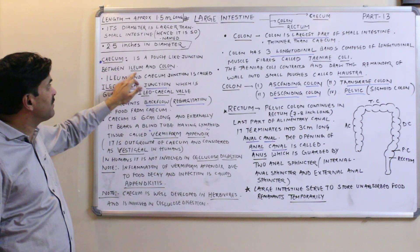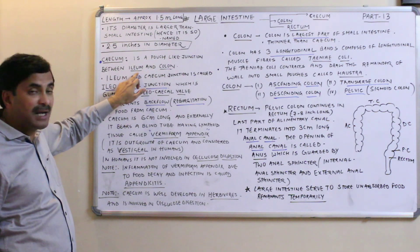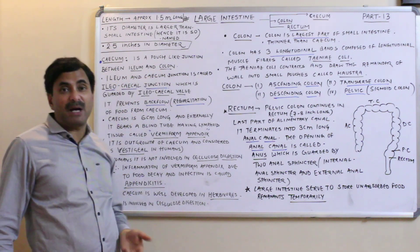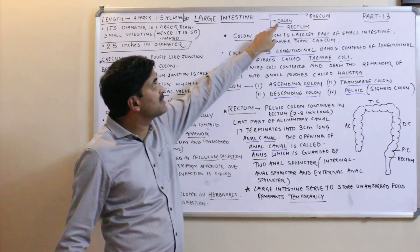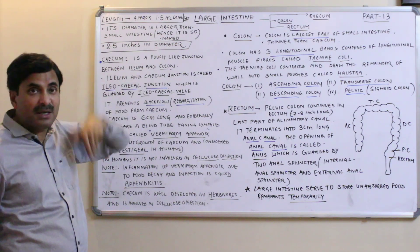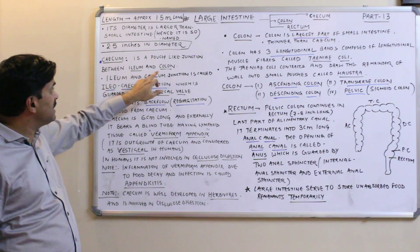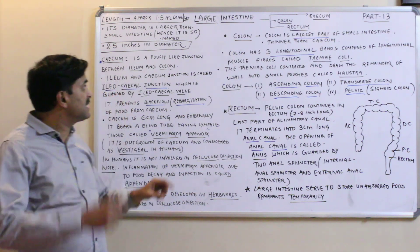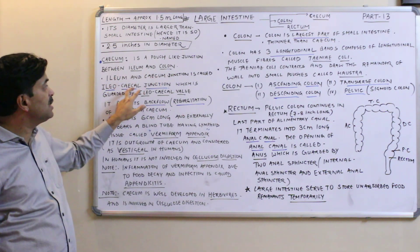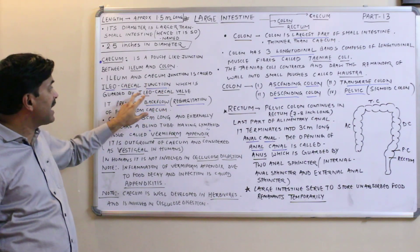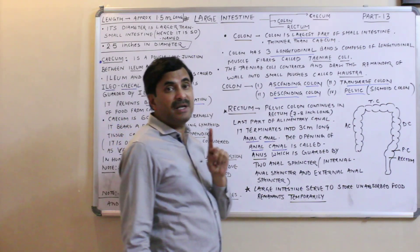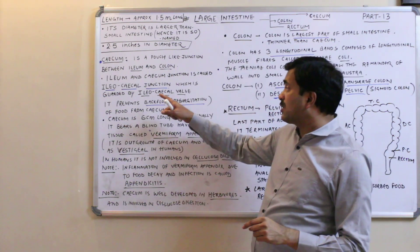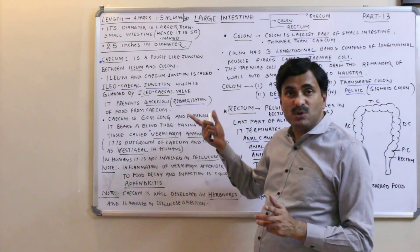The cecum is a pouch-like junction between the ileum and the colon. The last part of the small intestine is the ileum, and the next part of the large intestine is the colon, so the cecum lies in between. The junction of the ileum and cecum is called the ileocecal junction, and it is guarded by the ileocecal valve. The question arises: what is the role of the ileocecal valve?